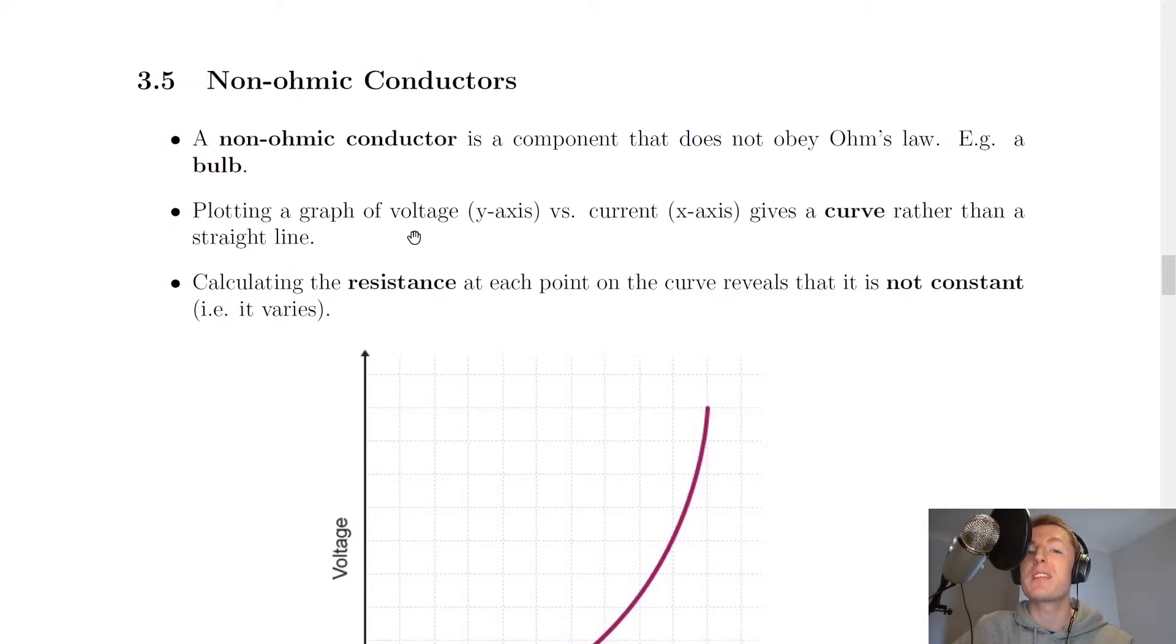So if you do an experiment similar to the Ohm's law experiment but you use a bulb instead of a resistor, then what you'll see is a different result. And this is because a bulb is a non-ohmic conductor, so it's not going to follow Ohm's law which says that voltage is directly proportional to current. So we should not expect a straight line graph for a non-ohmic conductor.